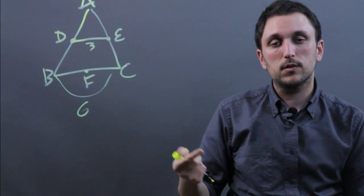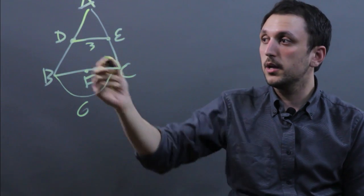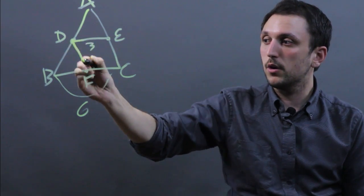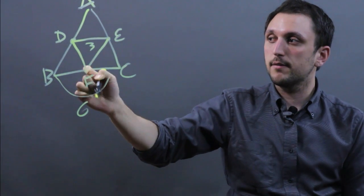Now, how many mid-segments can there be in a triangle? There can be 3. We can also draw DF, and we can also draw EF.